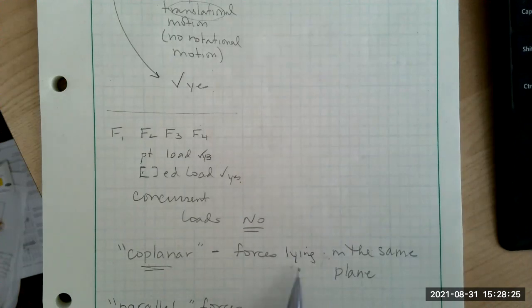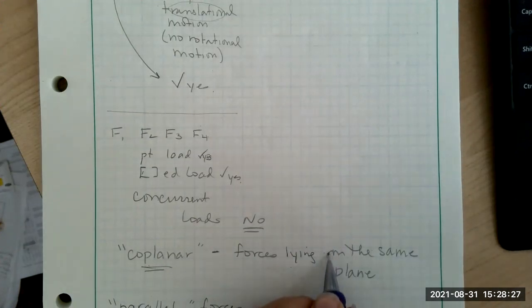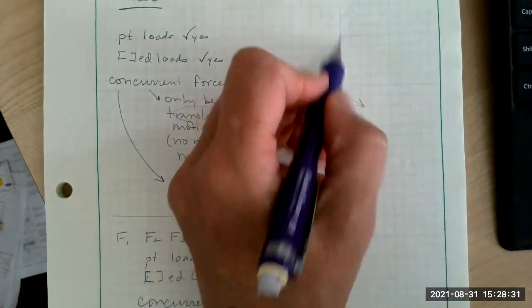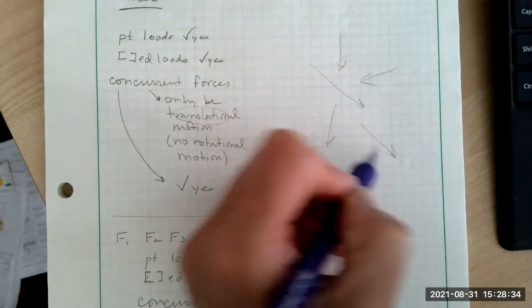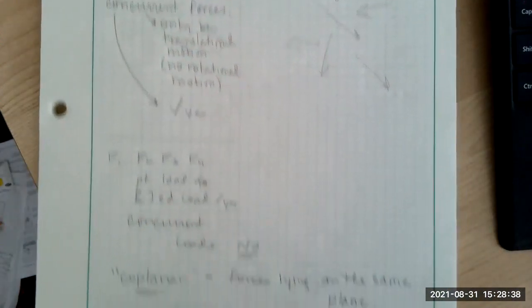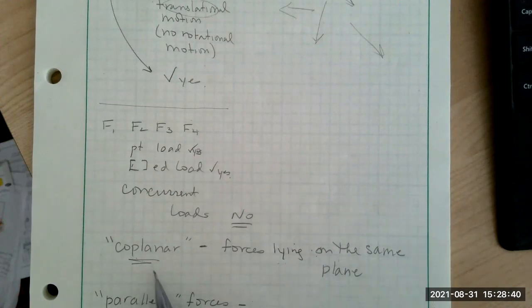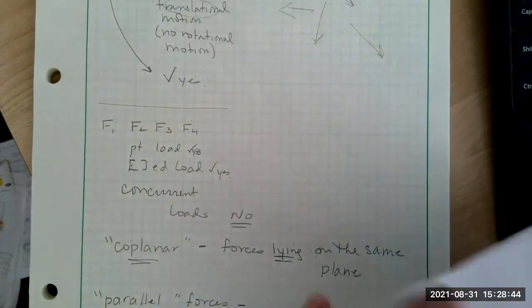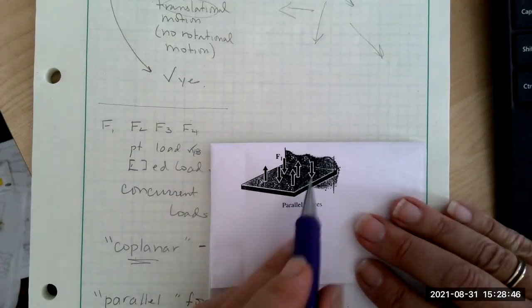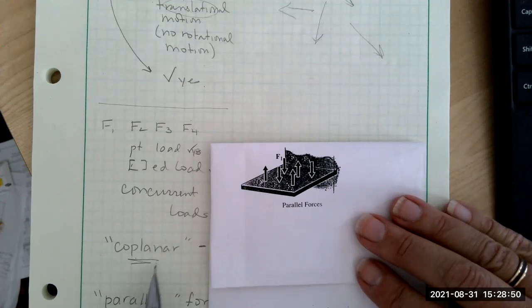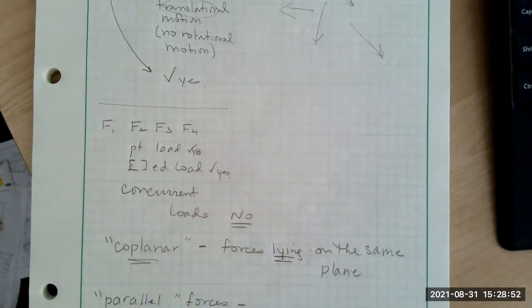Coplanar means forces that are lying on the same plane. So if I have a whole bunch of forces like this, and they're all lying on my piece of paper, they are all lying on the same plane, and therefore they're called coplanar. These are acting on the same plane, but they're not coplanar, because coplanar means they're lying on the same plane.